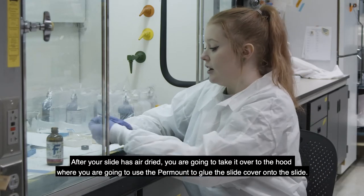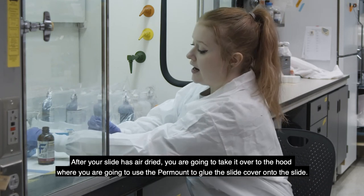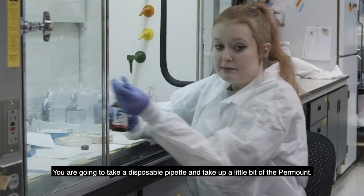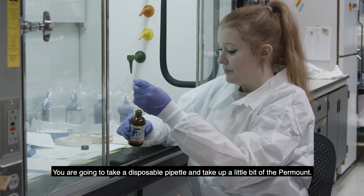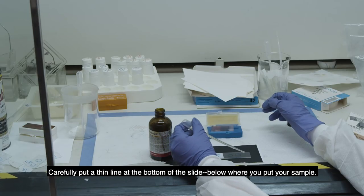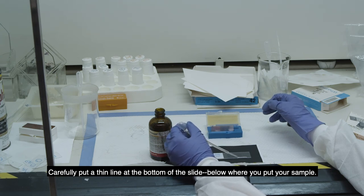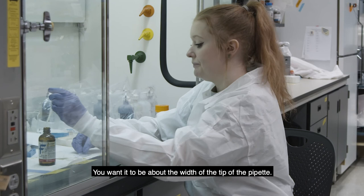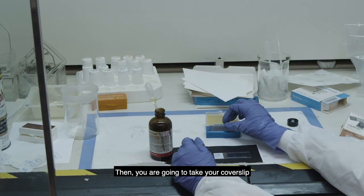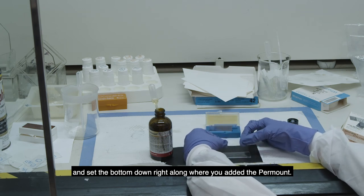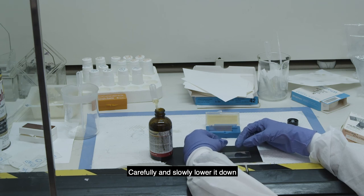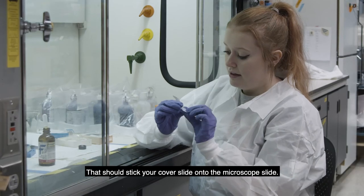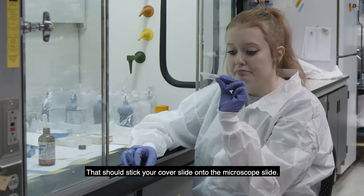After your slide has air dried, you're going to take it over to the hood where you're going to use the perm-out to glue the slide cover onto the slide. So you're going to take a disposable pipette and then just take up a little bit of the perm-out. And then you're going to carefully put a thin line at the bottom of the slide below where you put your sample. And you want it to be about the width of the tip of the pipette. And then you're going to take your cover slip and just set the bottom down right along where you added the perm-out. And then carefully and slowly lower it down so you don't get any bubbles in between the perm-out and the slide. And then actually stick your cover slide onto the microscope slide.